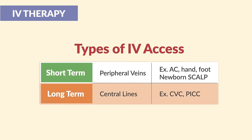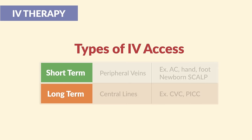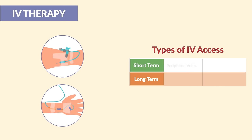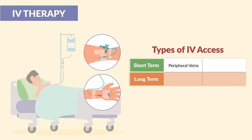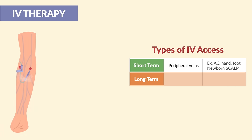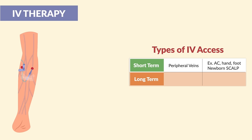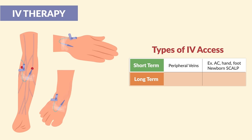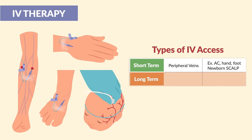Now for types of IV access, we have short-term and long-term. For short-term, these are given through regular IVs in peripheral veins. Short-term means hospital setting for a few days or even weeks. An example is an AC or antecubital near the elbow, hand, foot, or even newborns — we often give these IVs in the scalp because the head is very vascular.